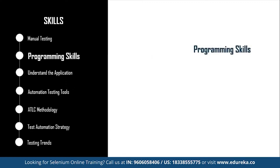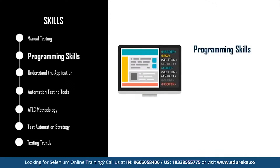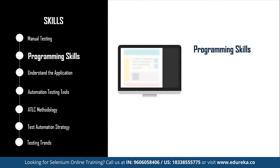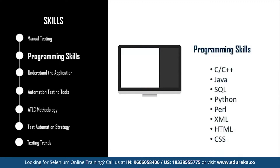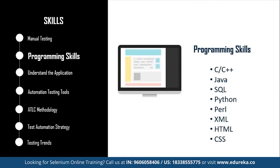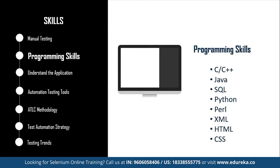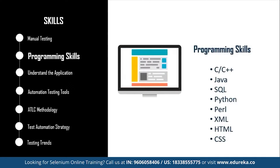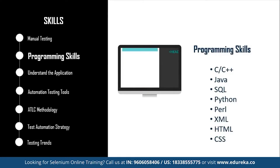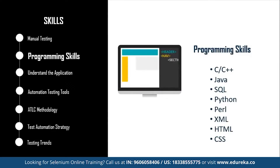The next skill is programming. It is very important to possess excellent technical programming skills. Most newcomers ask whether they need programming skills for automated testing, and many wish to skip the coding part. However, one needs to be very proficient with manual testing skills and programming to become a great automation testing engineer. If you are new to the testing industry, you need the following programming languages: C, C++, Java, SQL, Python, Perl, XML, HTML, and CSS.